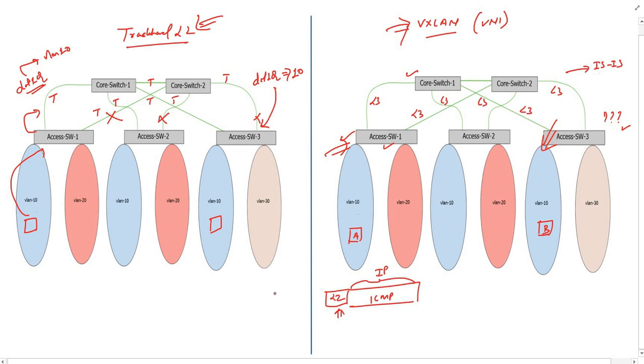It just needs to encapsulate this L2 frame into an IP packet and then forward it to the corresponding L3 link. Now, switch 1 needs to route the packet towards switch 3. Once switch 3 receives this encapsulated packet,